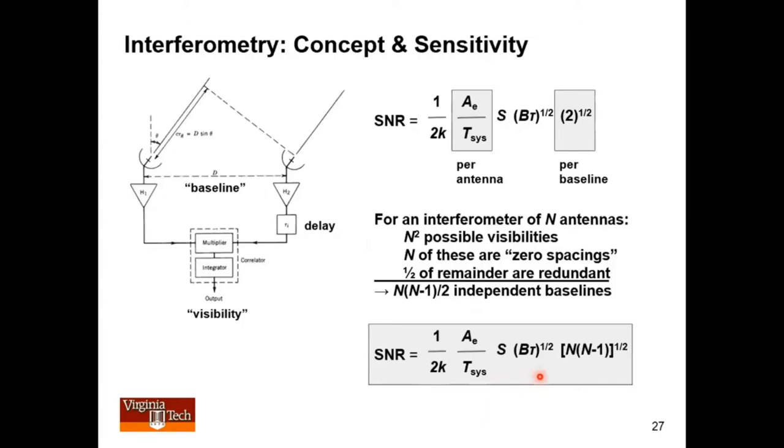So the radiometer equation is the single element or single antenna radiometer equation times this factor of the square root of n-squared minus n. That's that. This is not the whole story, though. I will return to this, time permitting.